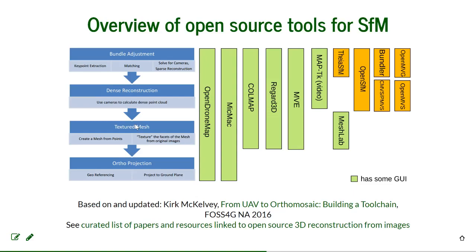Some of these projects try to incorporate more and more of the entire pipeline. The green ones have some kind of graphical user interface; the others are pure libraries you have to compile yourself. These open source projects incorporate one another in complicated ways — for example, OpenDroneMap uses OpenSfM internally. It used to also use CMVS but dropped it in favor of OpenSfM.